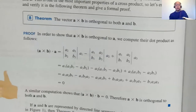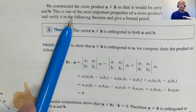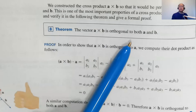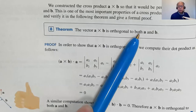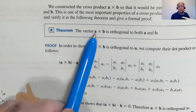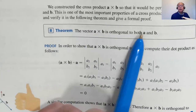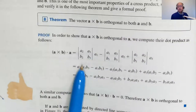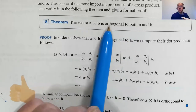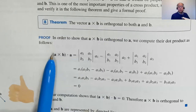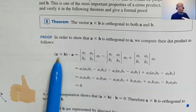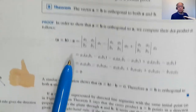Here's a theorem you can put on your cheat sheet: the vector A cross B is orthogonal — perpendicular — to both A and B. To show two vectors are orthogonal, their dot product must equal zero. Taking A cross B dotted with A gives zero, and similarly A cross B dotted with B also gives zero.